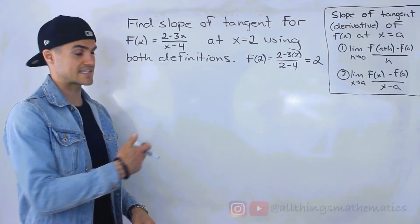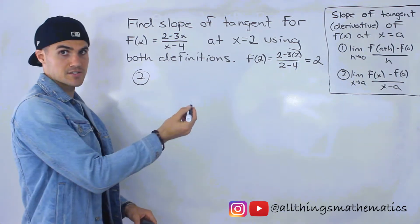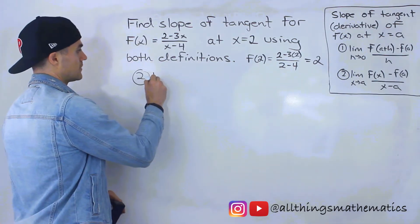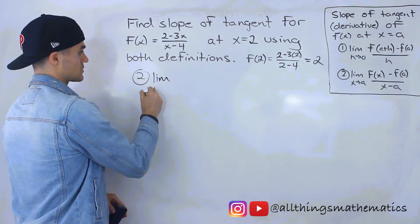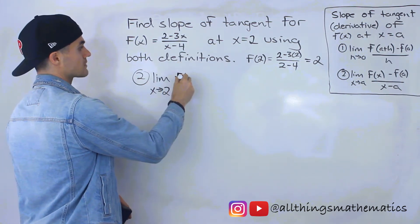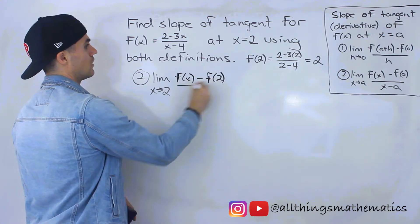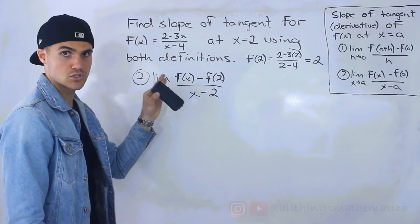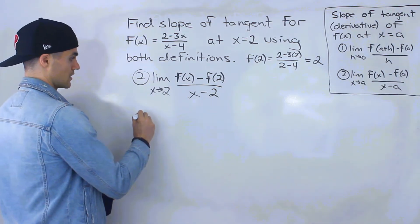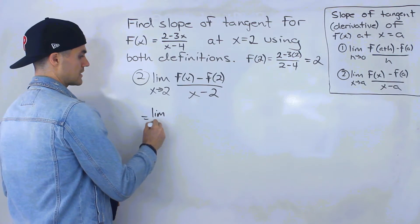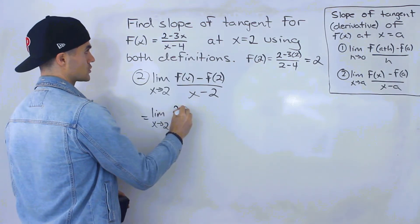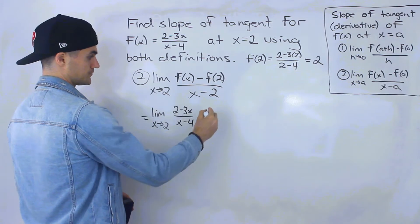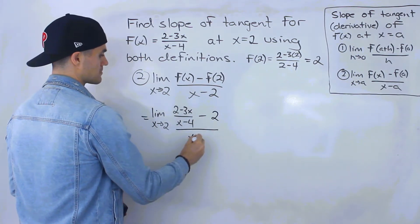Now let's use the second definition to verify we get the same answer of 5/2. The second definition is the limit as x approaches a — in this case, a equals 2 — of f(x) minus f(2), all over x minus 2. So we have the limit as x approaches 2 of the function (2 minus 3x)/(x minus 4), minus 2, all over x minus 2.